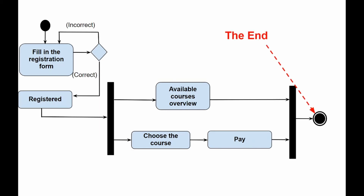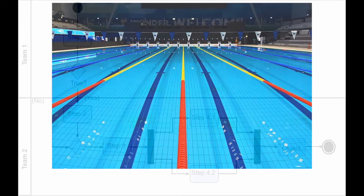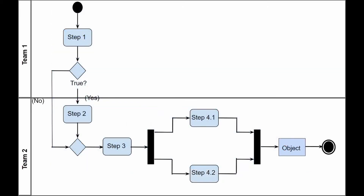There is another interesting way to add clarity to the diagram. The person who invented the first activity diagram introduced the concept of a swim lane as part of the diagram. A swim lane is a way of grouping activities performed by the same actor in a single thread.